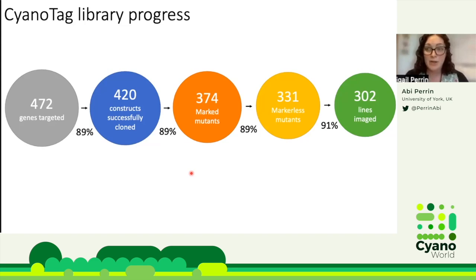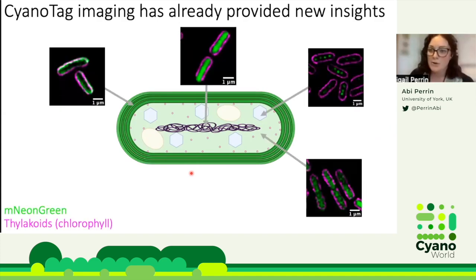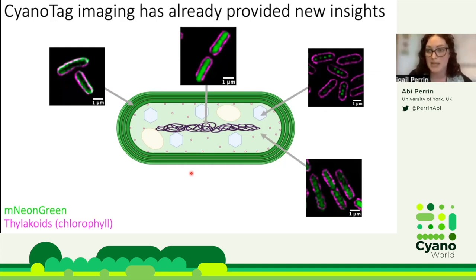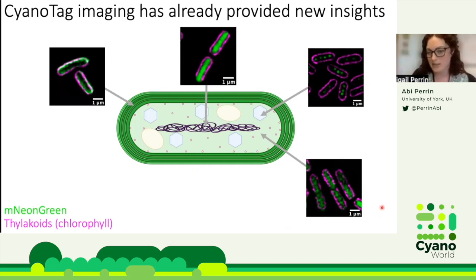All in all, we have imaging data for significantly more than 10 percent of this cyanobacterial proteome. Here are a few example images: the one on the left shows a tagged photosystem II protein localizing to the thylakoid membranes, where the green signal roughly coincides with the magenta autofluorescence of pigments in the thylakoid membrane. In the middle, a tagged transcription factor localizes toward the center of the cell where we would expect to find the genetic material. On the right, perhaps the most striking localization, tagged carboxysome proteins form discrete puncta along the central axis of the cell. The most common localization we see, however, is a diffuse pattern within the cytoplasm.